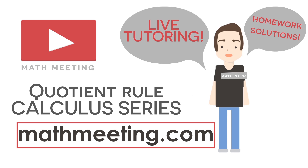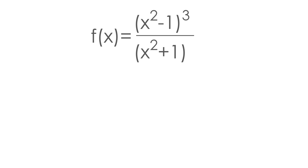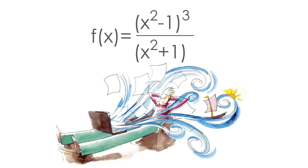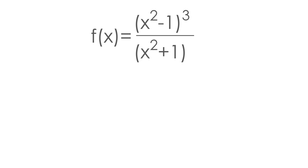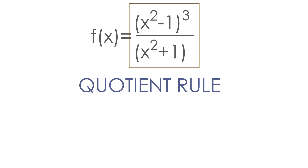Let's get started right away with this example. We need to find the derivative of the function (x² - 1)³ all over (x² + 1). This example is a little bit harder because we need to use the quotient rule and the chain rule, and there's going to be a ton of algebra involved. Whenever you have two things being divided with each other, we have to use the quotient rule to take the derivative.